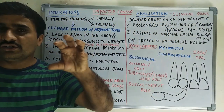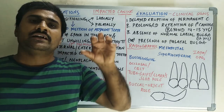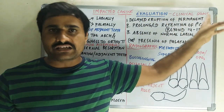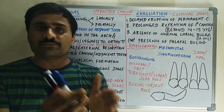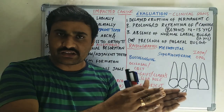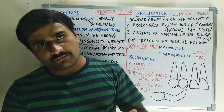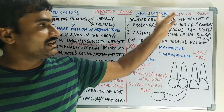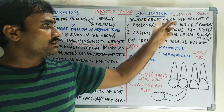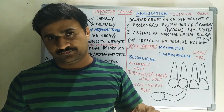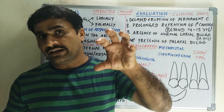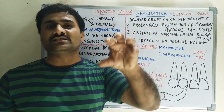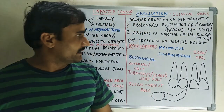Clinically, the first sign you can see with an impacted canine is delayed eruption. The normal eruption timing of the canine, whether maxillary or mandibular, is 11 to 13 years. So if there is delayed eruption or prolonged retention of the primary canine — meaning the primary canine is retained beyond 14 to 15 years — then you can suspect an impacted canine.